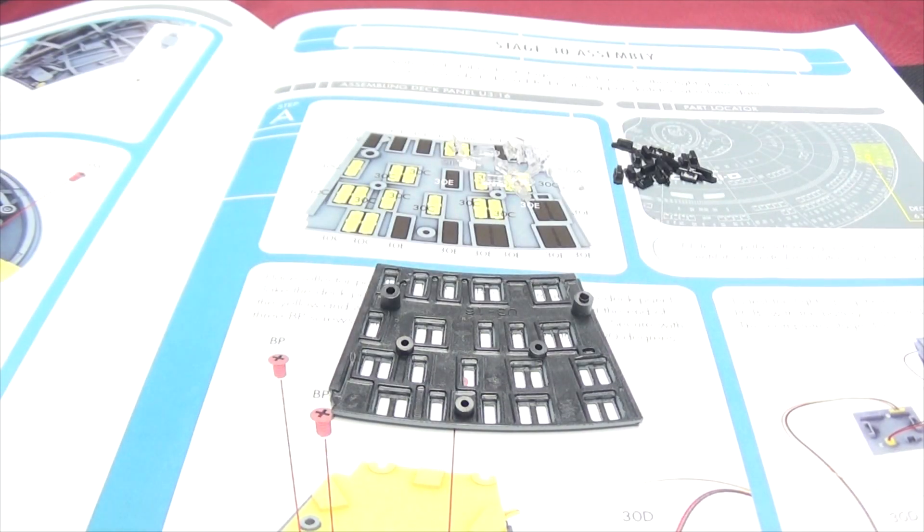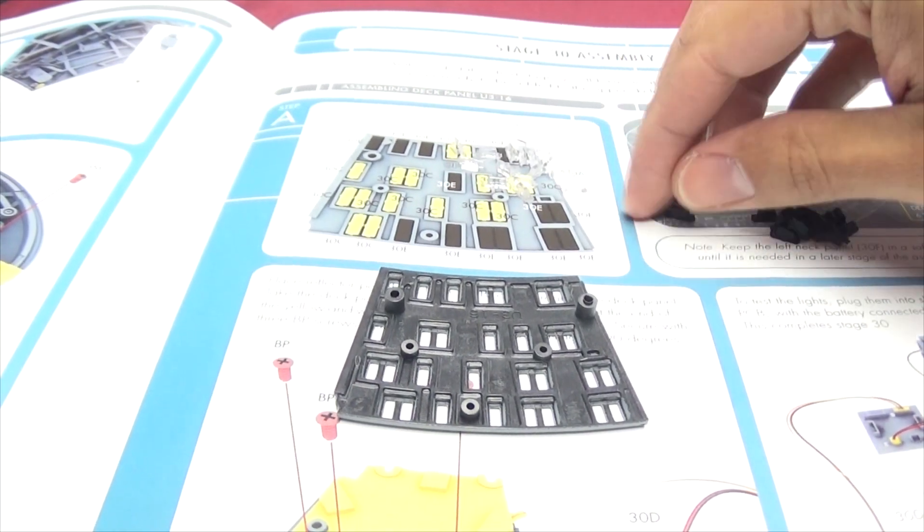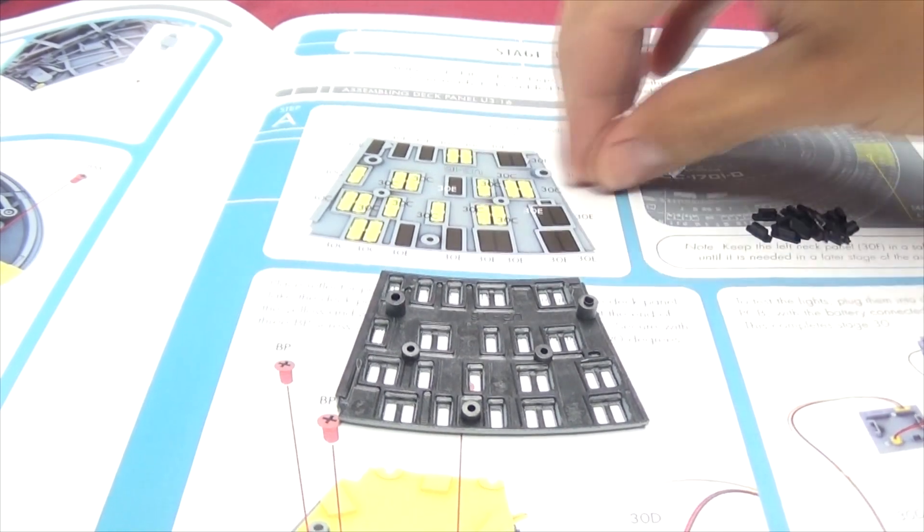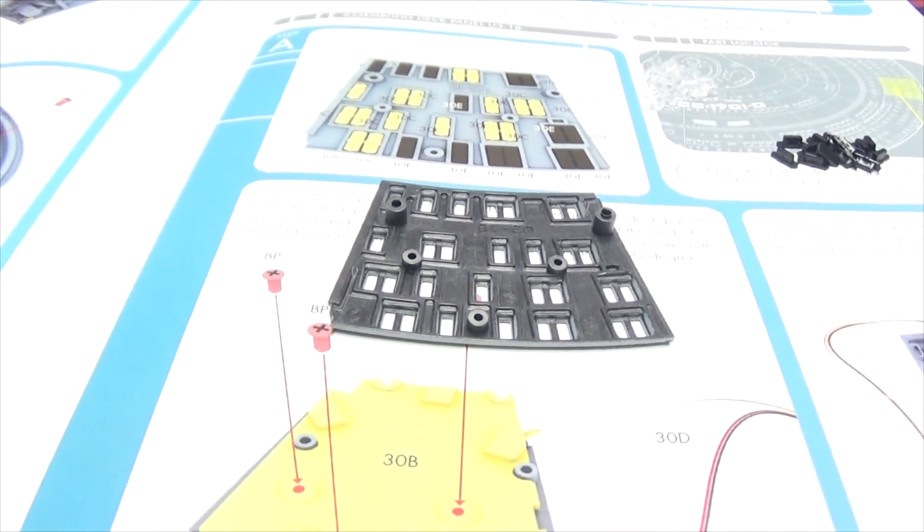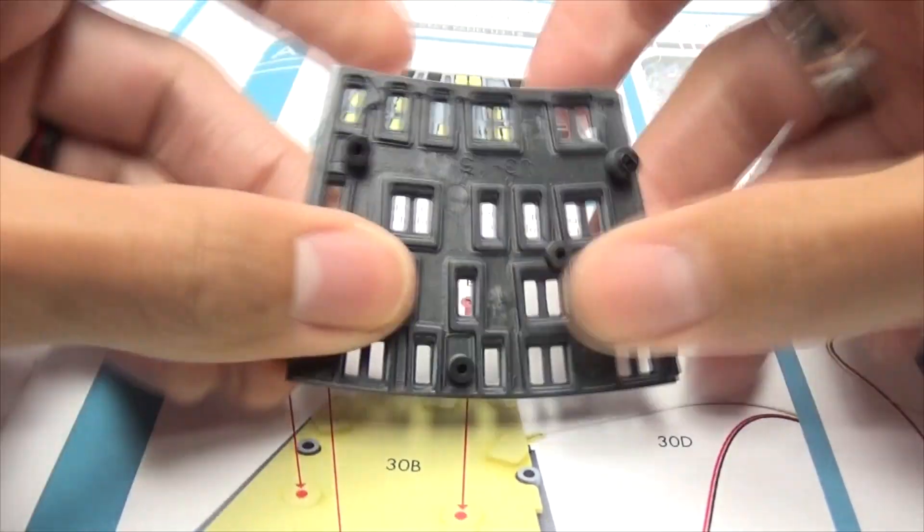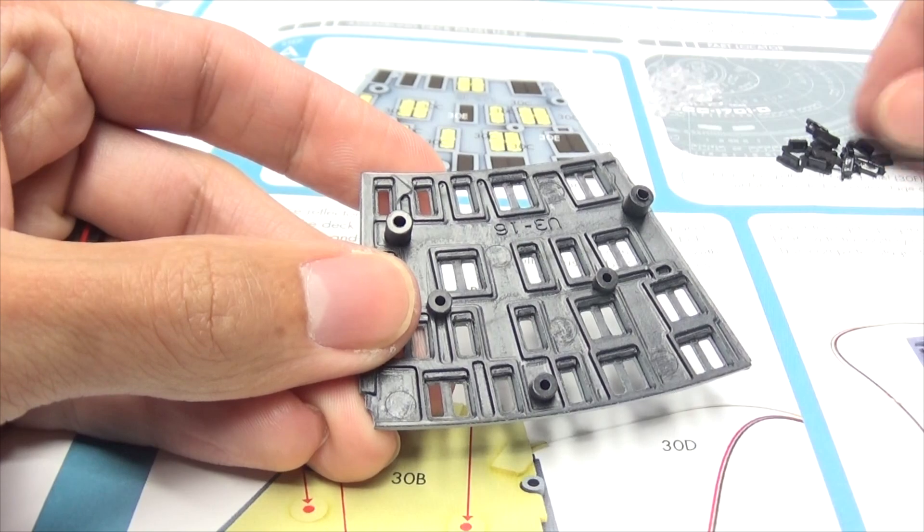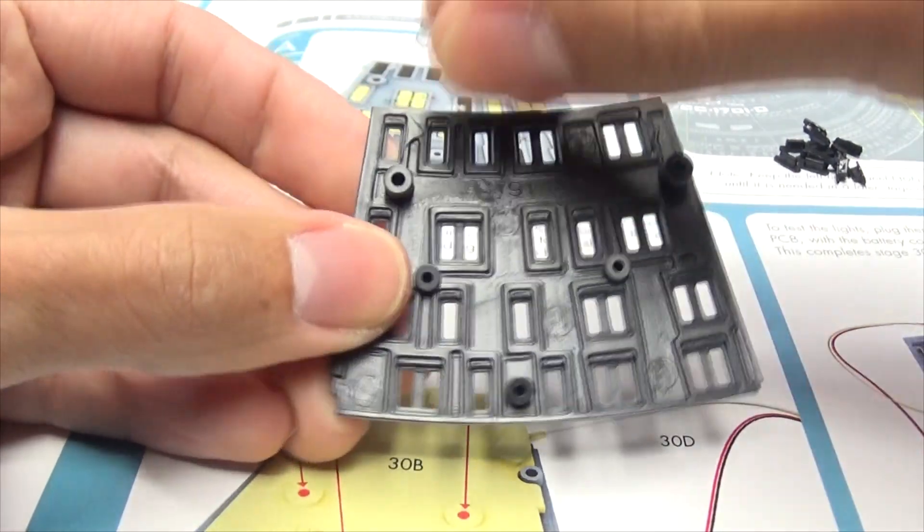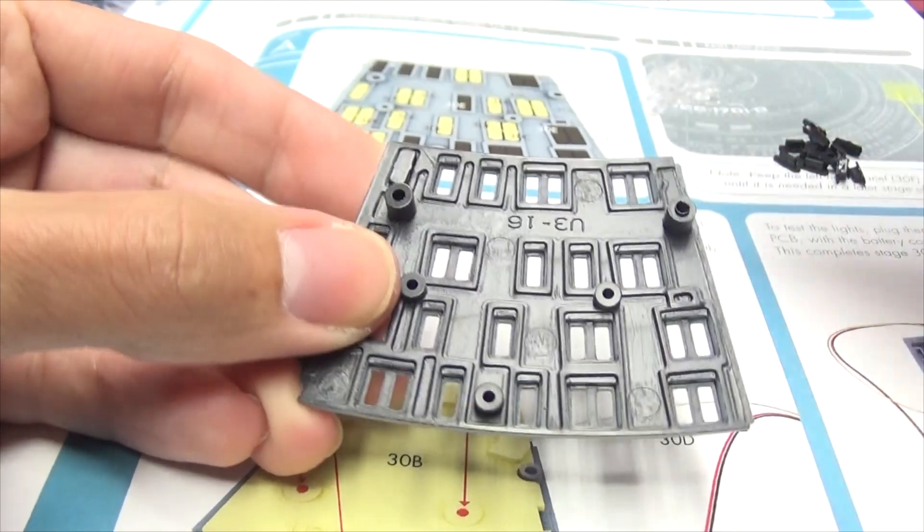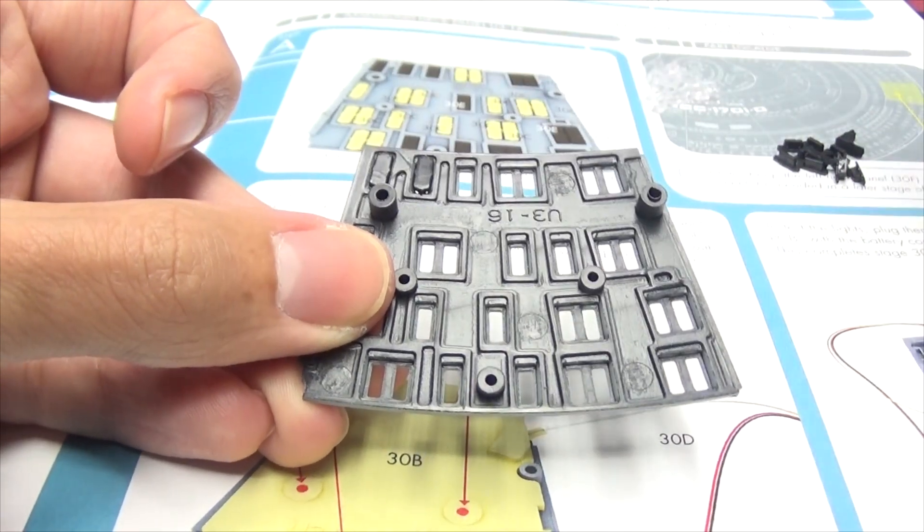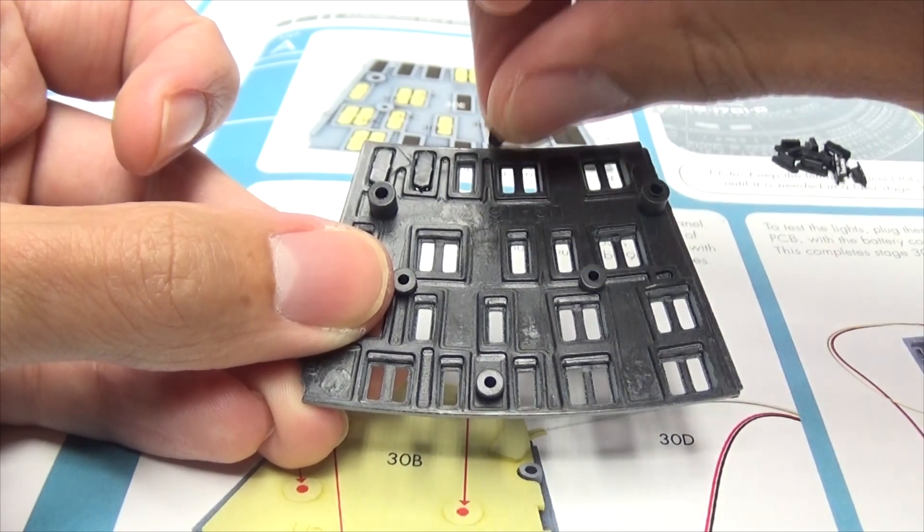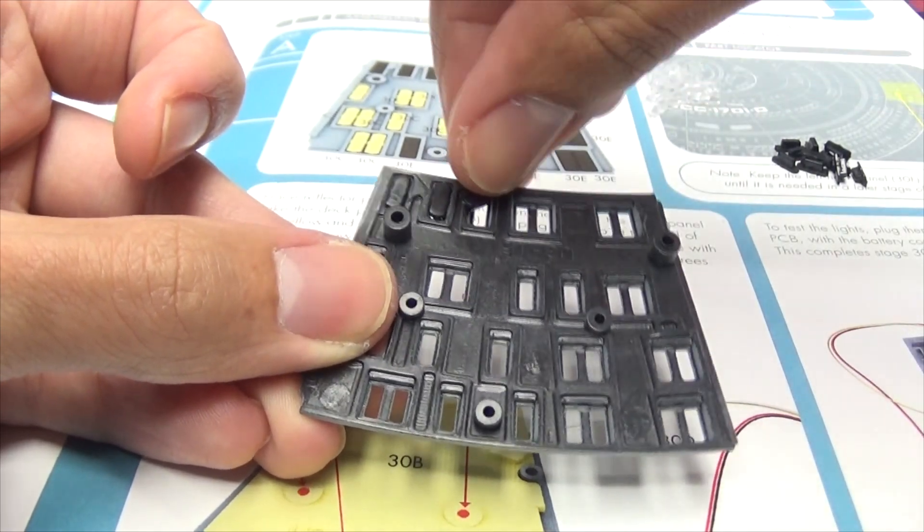Alrighty, we got all of our windows nipped here, so now we can commence with the windowing. This is actually the only thing we're doing in this stage of the build, just setting up this panel here. We're not attaching it, we're not doing anything else. The neck piece we're not even using right now.